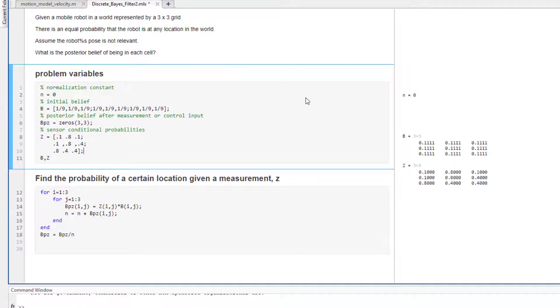Then down here we have a for loop where I iterate through the matrix for i equal one to three, for j equal one to three, where I use the probability of a sensor value given its location times the belief of being in that location.